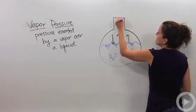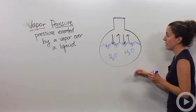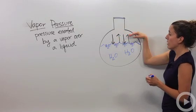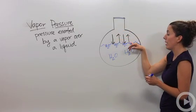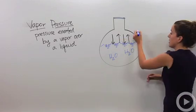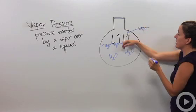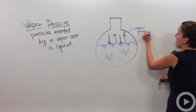So let's say we capped this container here. Now the pressure of the gas inside this chamber right here on top of the liquid water is called the vapor pressure. So this is our vapor pressure. So whatever we measure in here is what we're going to call our vapor pressure.